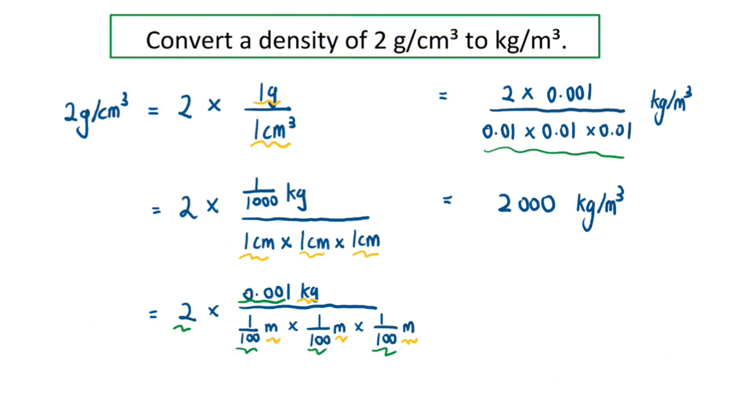So now we have successfully converted 2 g/cm³ to 2000 kg/m³, and that's the answer for this question.